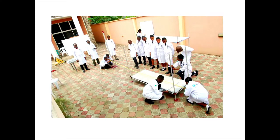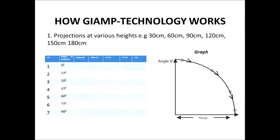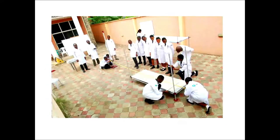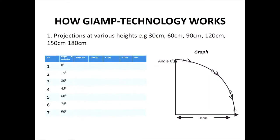For projection at different heights, the landing bed is collapsed to the floor. The ball is projected at maybe 10, 20, 30, 40, 50 centimeters — you get different values. When you plot the graph you can see how it looks when projecting at different heights.